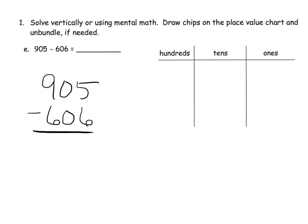I'll start with the place value chart and model 905 — one hundred, two hundred, three hundred, four hundred, five hundred, six hundred, seven hundred, eight hundred, nine hundred, and then one, two, three, four, five ones. There's my model for 905, and now we're going to start crossing off.